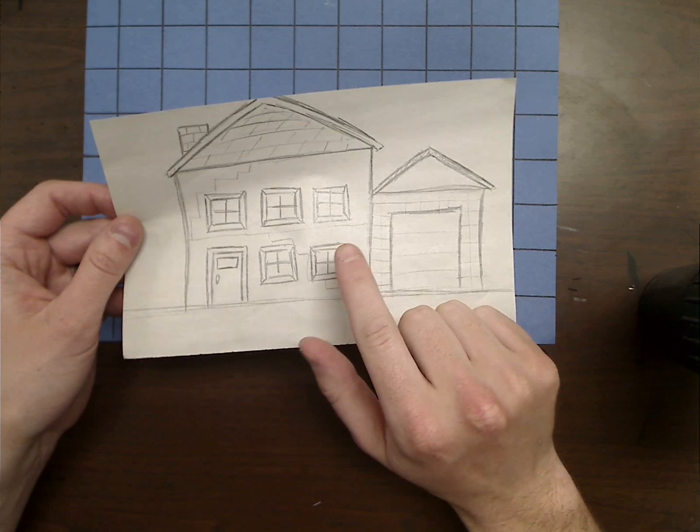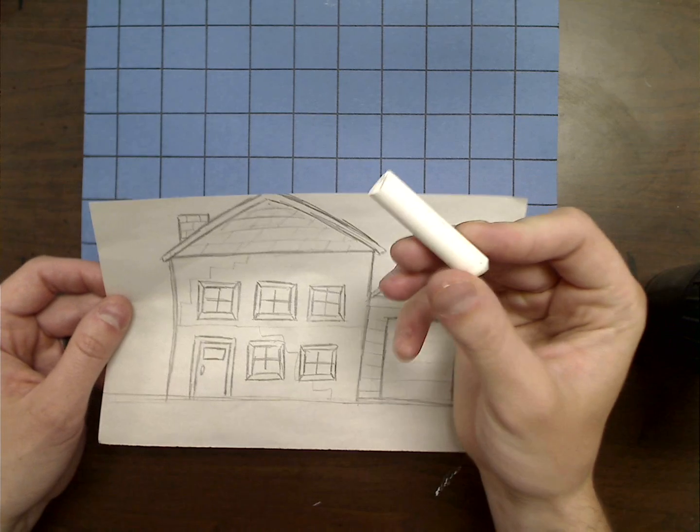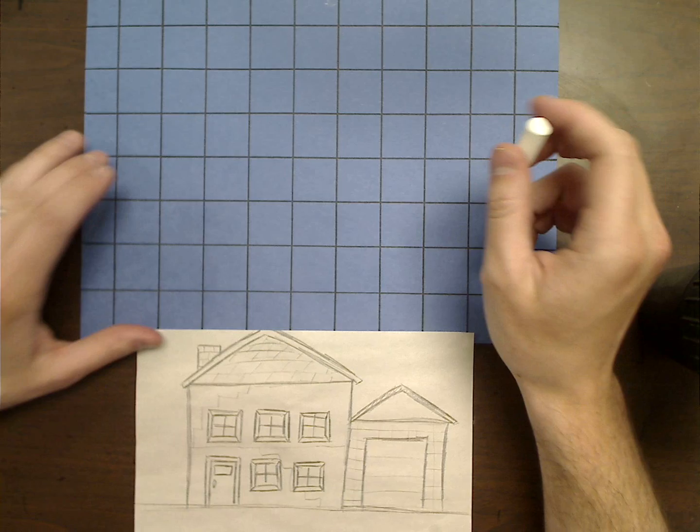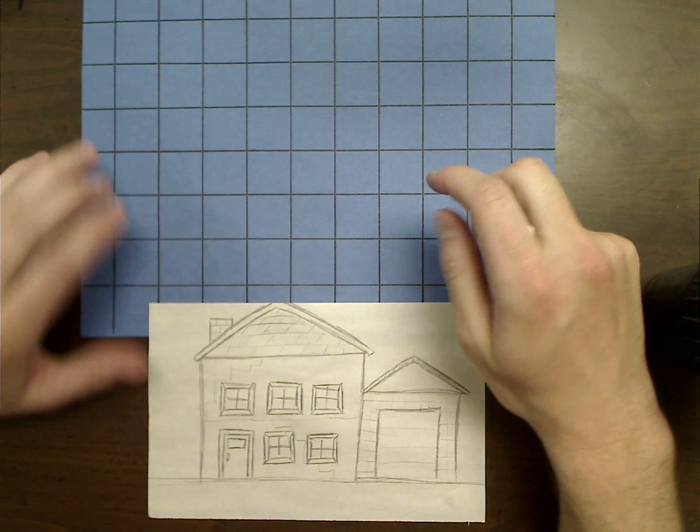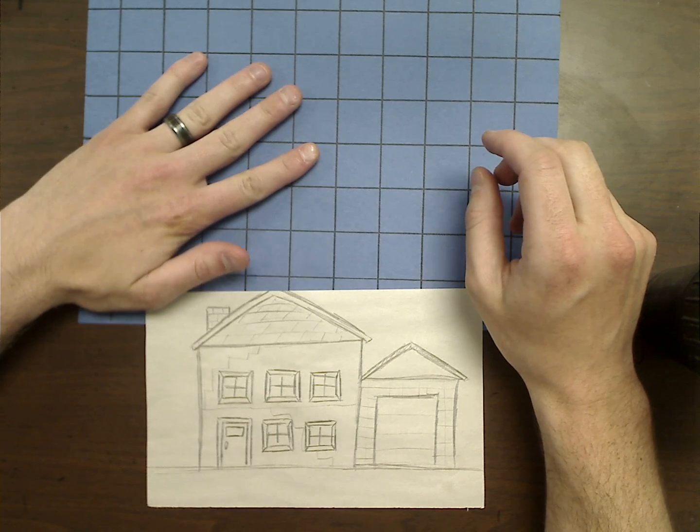Once you're finished doing that step, we're going to go through with a white crayon and we are going to copy our image onto our blueprint paper.